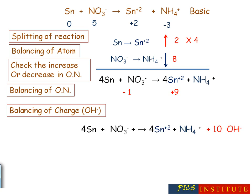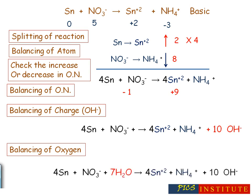Oxidation number as well as charge is balanced. The final step is to balance the oxygen. The left-hand side consists of 3 oxygen atoms and the right-hand side consists of 10 oxygen atoms, so we'll add seven water molecules to the left-hand side in order to balance the oxygen atoms.